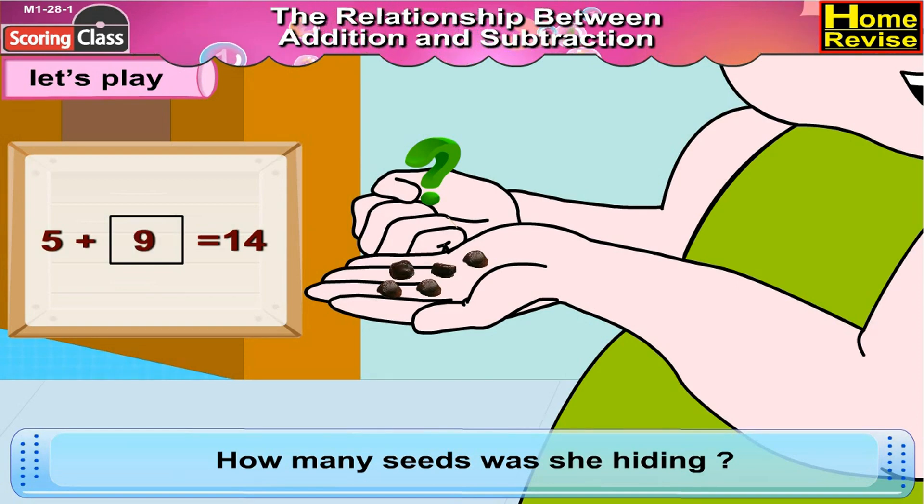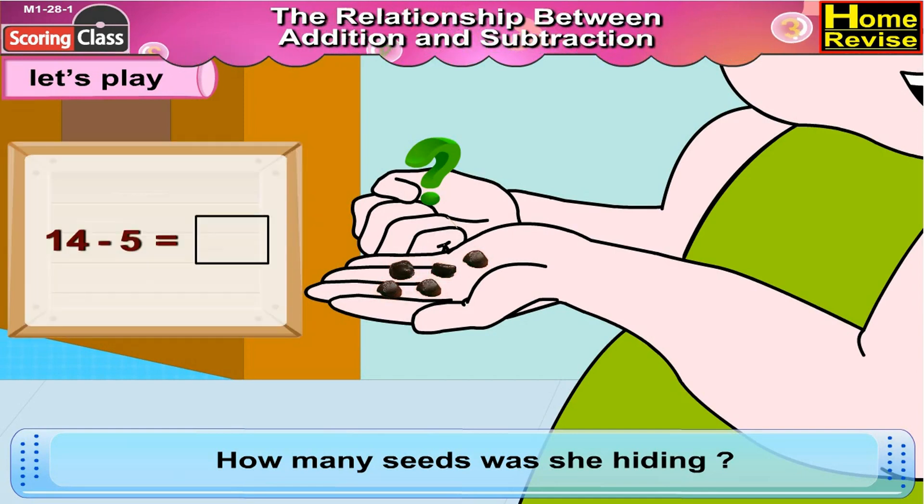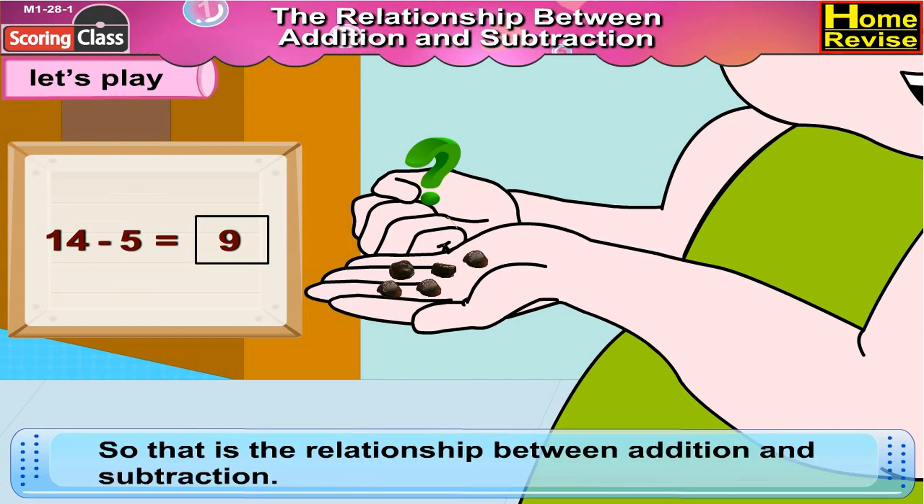You are right. 5 plus 9 is equal to 14. And you know what? 14 minus 5 is equal to 9 as well. Both ways the answer is same. So that is the relationship between subtraction and addition.